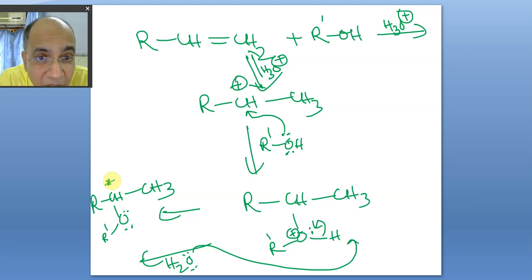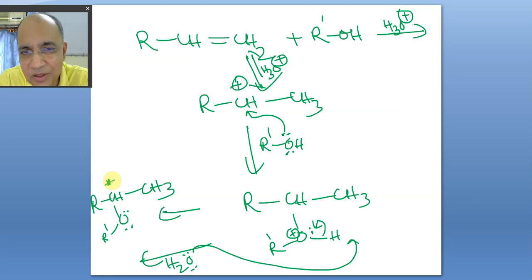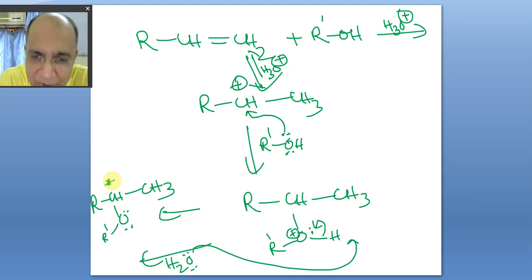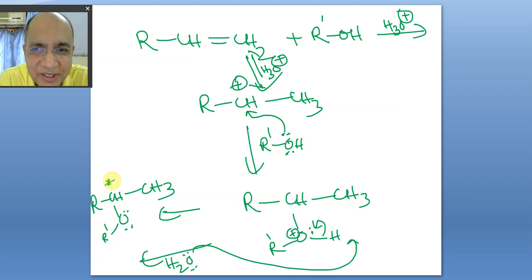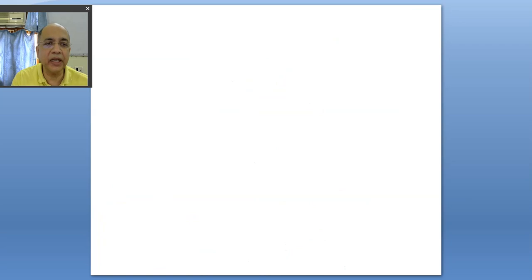This is the same process as hydration: in hydration an alcohol is produced; in alcoholation an ether is produced. Rearrangement can also occur in the same way. Addition of alcohol to alkene in acidic medium is analogous to addition of water to alkene — both are solvation processes.